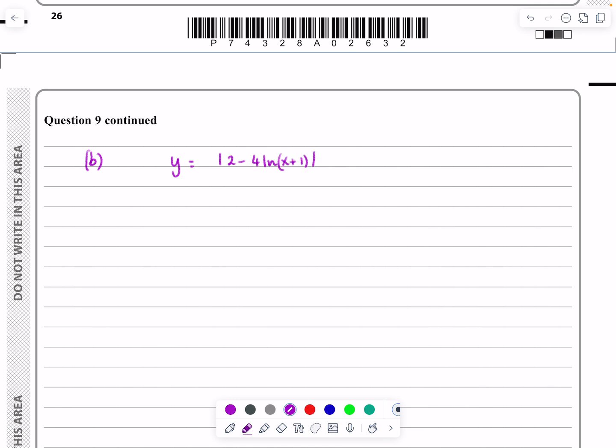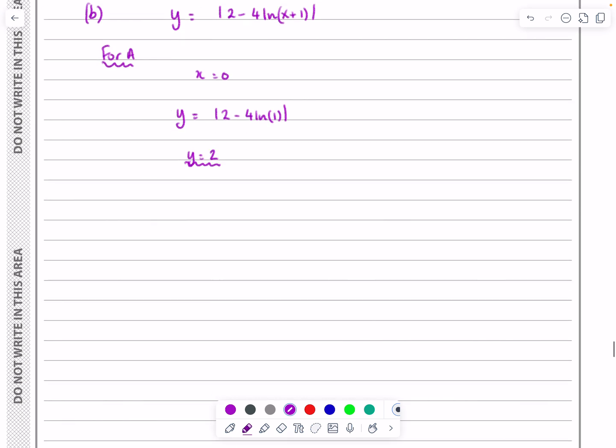And for A that's going to be where x is equal to 0. So simply sub that in. We're going to get y equals modulus 2 minus 4 ln(1) there. ln(1) is equal to 0. So we're going to get 2 minus 0. We're going to get y is equal to 2. Very straightforward.